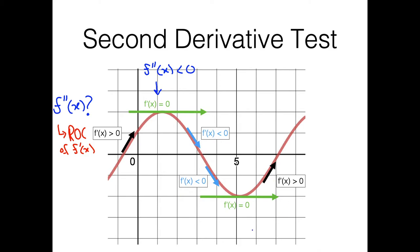Let's apply a similar logic for the minimum. Here our first derivative starts negative, then we hit zero at our minimum, and then it becomes positive. So it goes from negative to positive, which tells us that around this minimum our first derivative is actually increasing — it's getting bigger and bigger. Therefore, around this minimum we can say that our second derivative is going to be greater than zero.